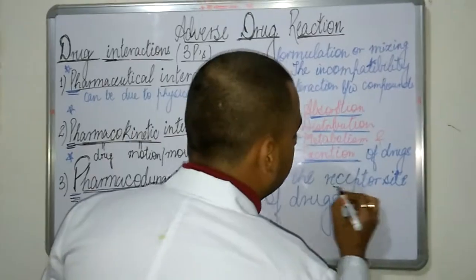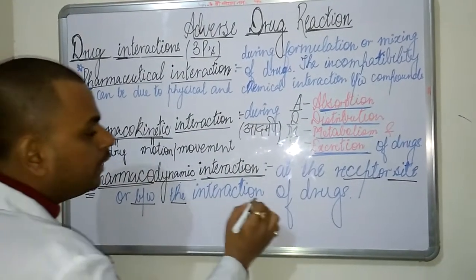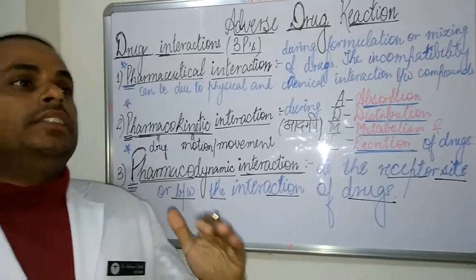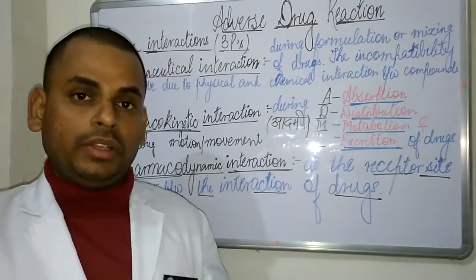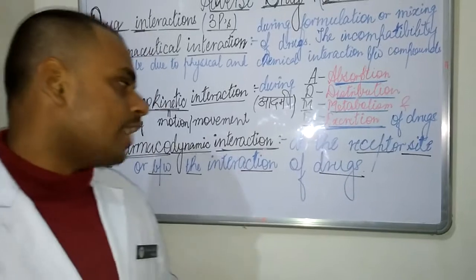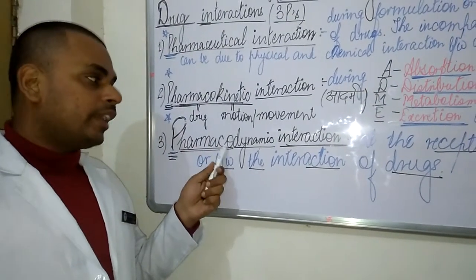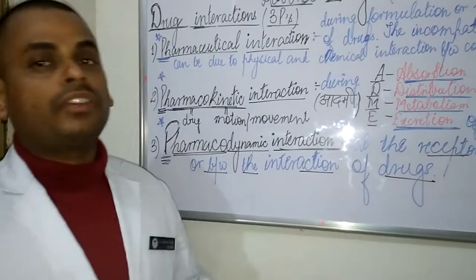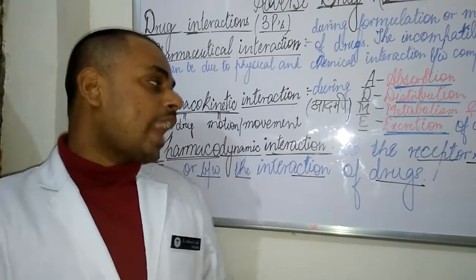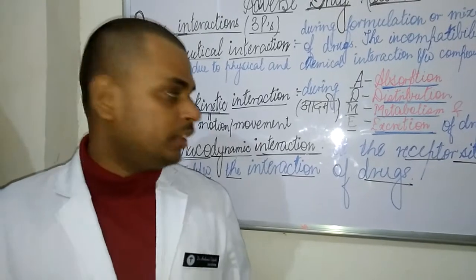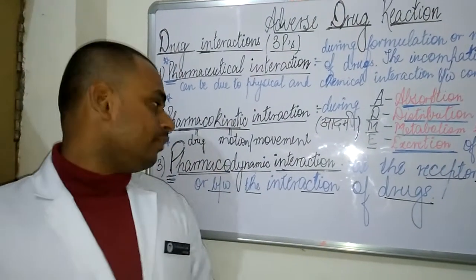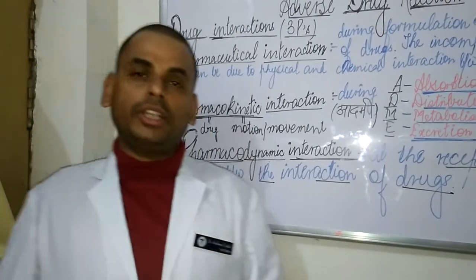Lastly, the third P refers to pharmacodynamic interactions. These occur at the receptor site or between the interaction of different drugs at the cellular or nuclear level, where the drug acts on certain receptors. Pharmacodynamic interactions can also be seen when a large variety of different drugs are administered to the same patient, causing interactions between two or three different drugs given simultaneously.